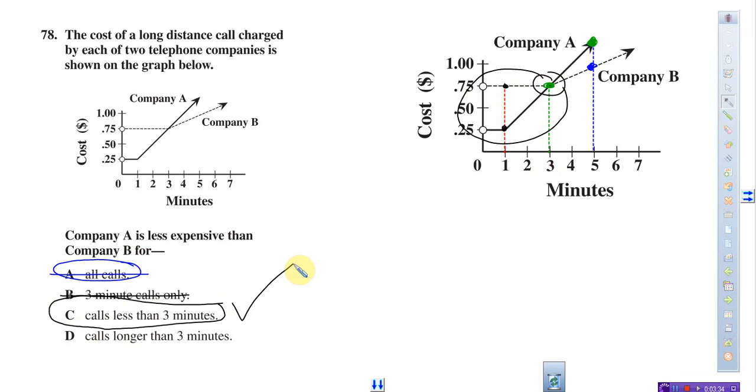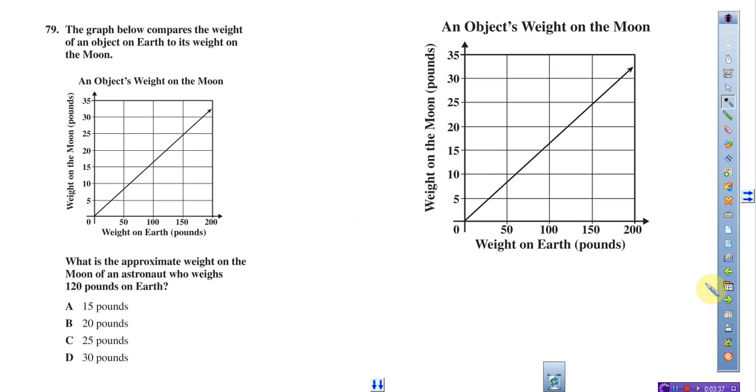Let's try another one. We're reading the graph and the important information. Here's problem 79. I blew up the graph so we can get a better picture. The graph below shows the weight on Earth to the weight on the Moon.